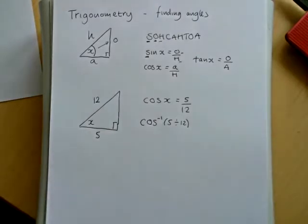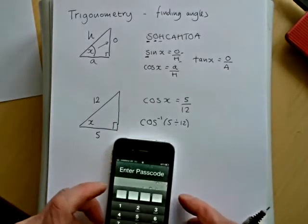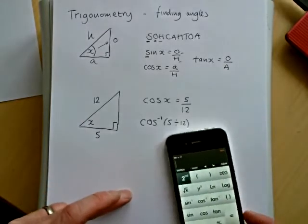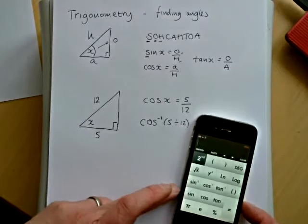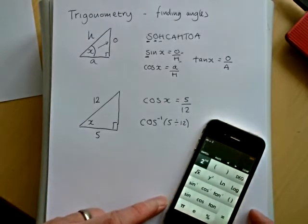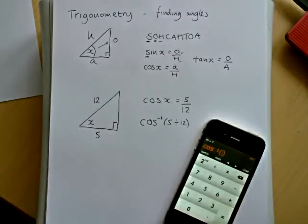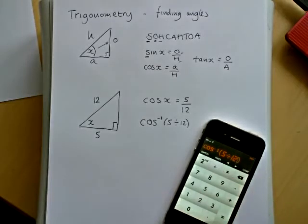So I have my calculator ready, and I'll quickly show you how to do that. Now I'm using a calculator that's built into the iPhone. Your calculator might be different, so you've got to check you can get the same answer as me. Now you can see here I've got the cos minus one. So cos minus one, and now it's expecting the ratio. So I'm going to put 5 divided by 12.